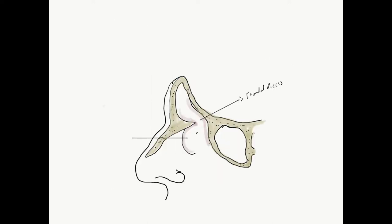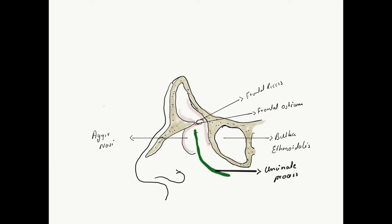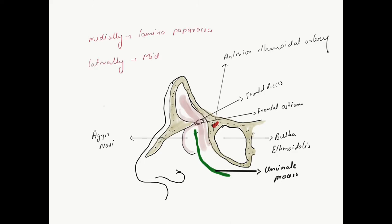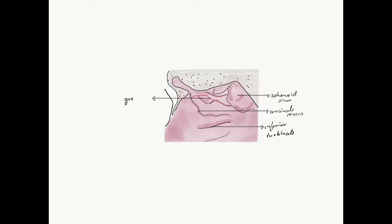The frontal recess has an hourglass shape. Anteriorly it is bounded by the agger nasi cells, posteriorly we have the bulla ethmoidalis, and there is the frontal ostium. The uncinate process within the middle meatus can be appreciated, and one can find the anterior ethmoidal artery in the anterior wall at the skull base. The medial wall is contributed by the lamina papyracea, and laterally we have the middle turbinate. The whole of the frontal sinus drains along the middle meatus, lateral to the uncinate process most commonly.